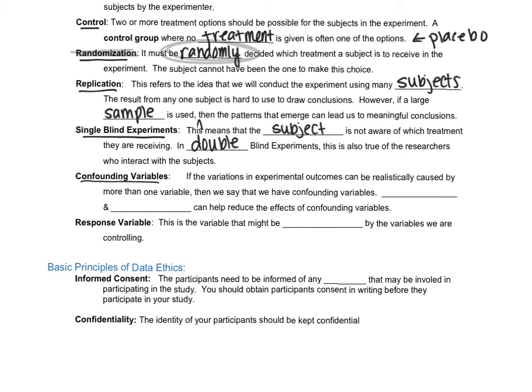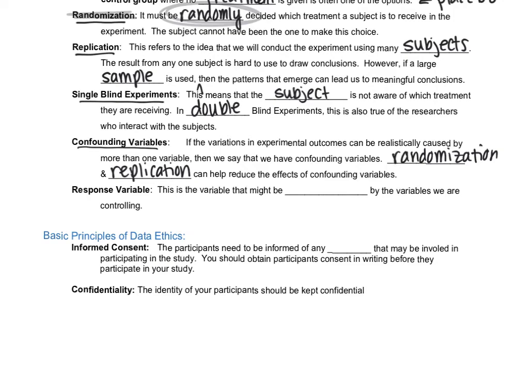Confounding variables. If the variations in experimental outcomes can be realistically caused by more than one variable. So is there something else that could be causing this? So in terms of a medicine helping you sleep, did the medicine help you sleep? Or did you do something else that helped you sleep? Did you exercise a lot that day? Did you drink? Are there other things that made you fall asleep than the medicine? And we call those confounding variables. And this is why randomization and replication are so important. Because they can help reduce the effects of confounding variables. Because not every single person will have that same confounding variable. So by assigning randomly and having lots of people, it takes care of that.